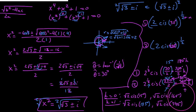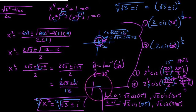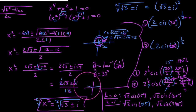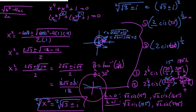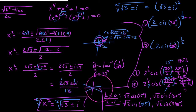So we could go graph all of these. We'd say 15 degrees would be about right here, 165 degrees would be over here, 195 would be down here, and 345 would be over here. So we found all of our roots. Cheers.